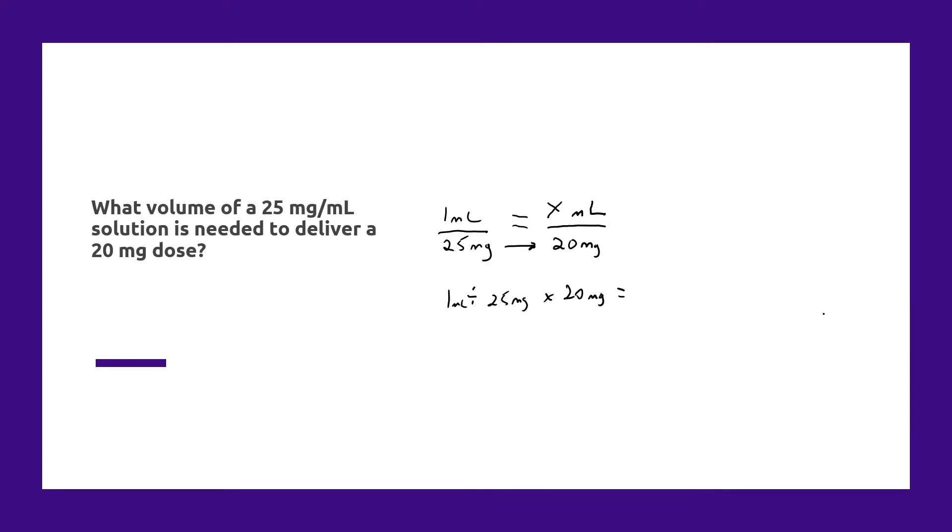So if I bring out my calculator, 1 divided by 25 times 20 is going to be 0.8 milliliters. So that would be the answer to this question.